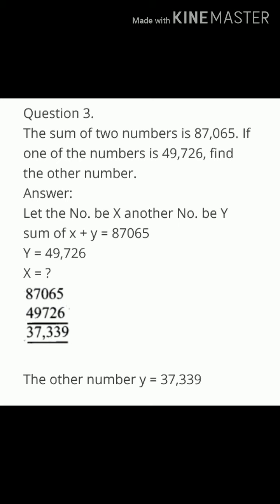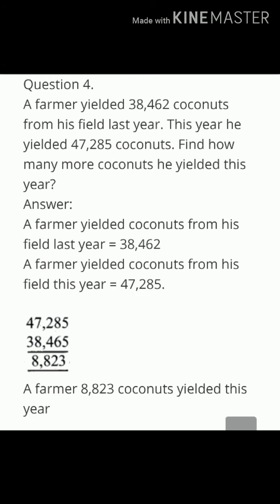So, what about x? What we have to do? 87,065 minus 49,726, then we get the answer 37,339. The other number y equals 37,339.